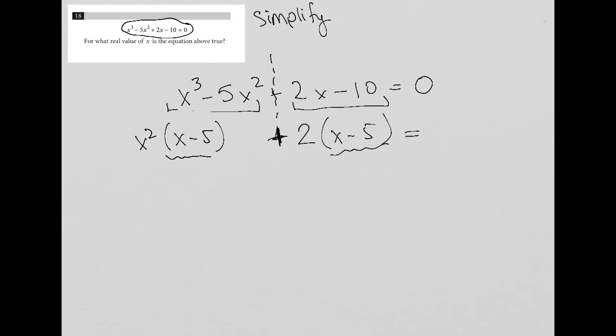So all we do from this stage is that we group the two GCFs together in their own parentheses. So we'd have x² + 2, and we combine these two basically repeats of this x - 5 into just a single parentheses. So x - 5, and then we have this equal to 0.